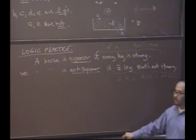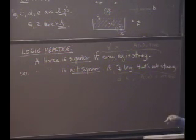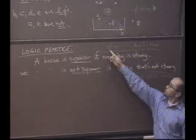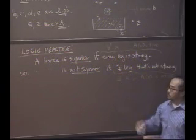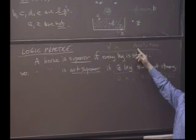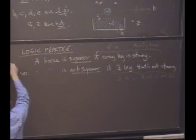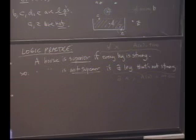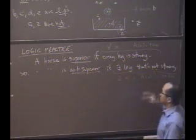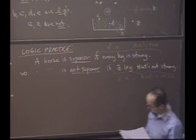So when you negate, this is actually really helpful when our definitions start getting really complicated to remember this. Negation turns a for all into there exists, and then it negates the statement following. Okay. What if I had a statement that was there exists and I negate it? It becomes a for all, okay?